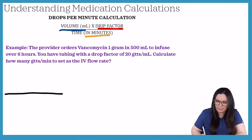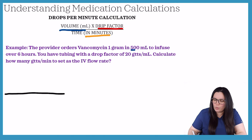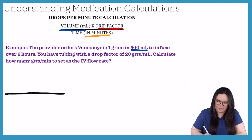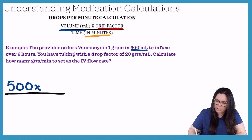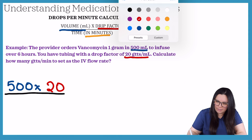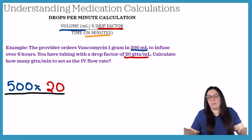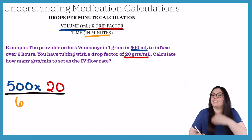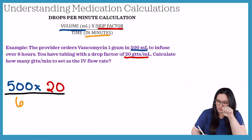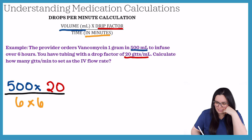Our volume in mL is 500 mL, so we plug that in, multiplied by our drip factor of 20. Lastly, we need our time in minutes — we know it infuses over six hours, so we multiply six by 60 to convert to minutes.